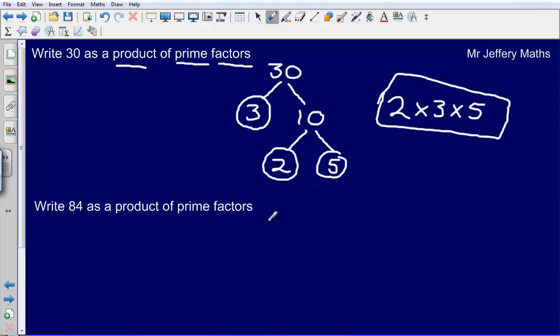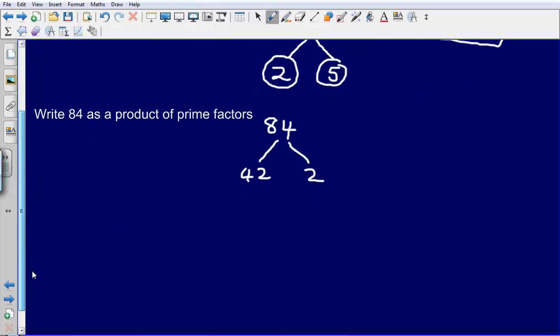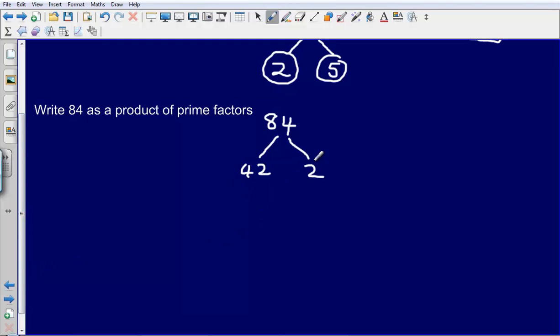Next one, write 84 as a product of prime factors. So if I write out the number 84, then what two numbers can multiply together to make 84? So I could start off by saying that 42 times 2 gives me 84. So 2 is a prime number.